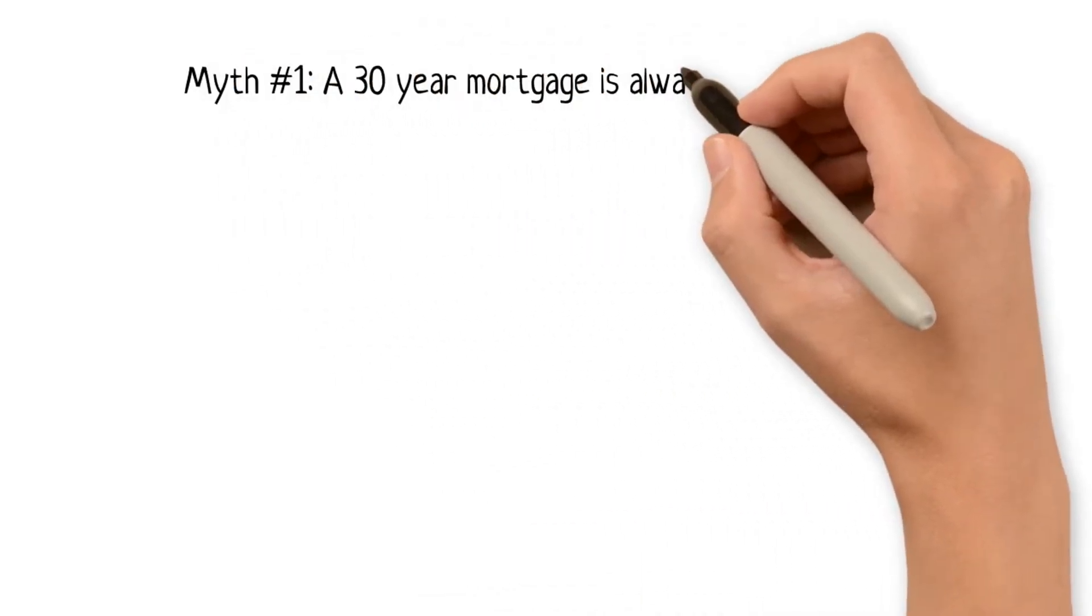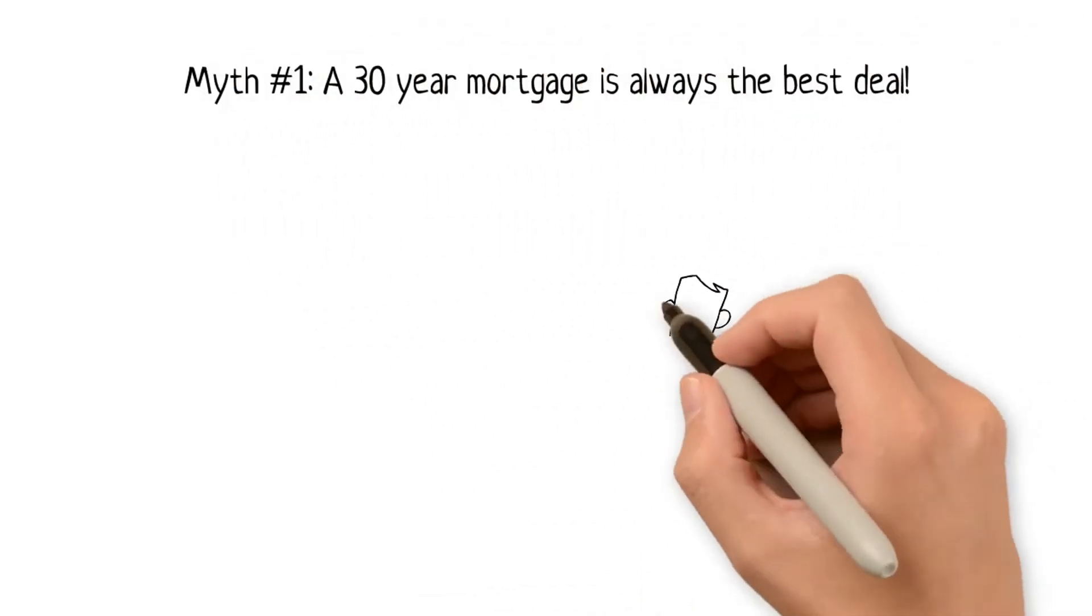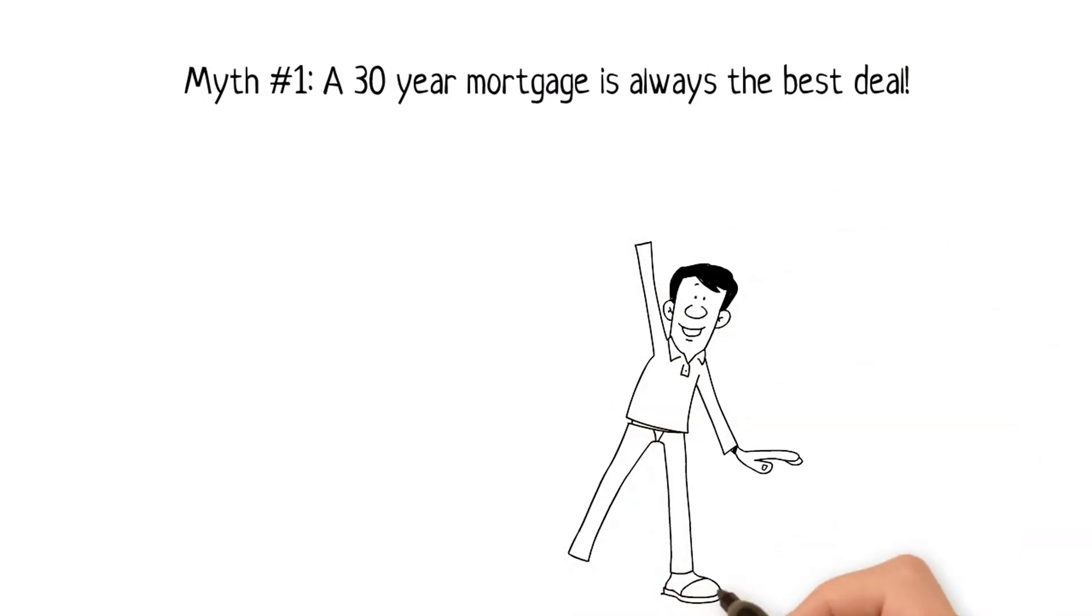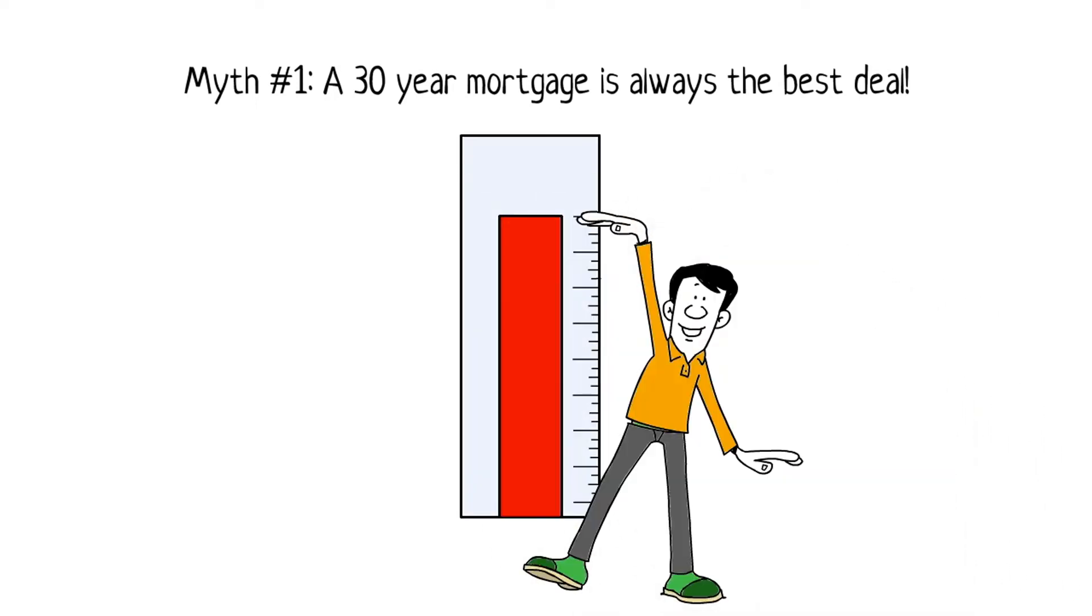Myth #1: A 30-year mortgage is always the best deal. Not necessarily. While monthly payments may be lower, the longer the fixed-rate mortgage, the higher your interest rate and interest payments will be, so explore and compare all options available.